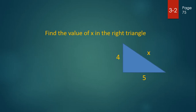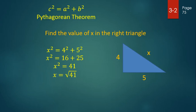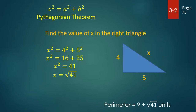In this triangle, we also want to find the length of the hypotenuse. We know that x squared equals four squared plus five squared. In this case, we're going to get a hypotenuse length that is an irrational number — the square root of forty-one. We could still find the perimeter of this triangle: the perimeter, being the sum of the lengths of the three sides, would be four plus five plus the square root of forty-one, which is nine plus the square root of forty-one units.